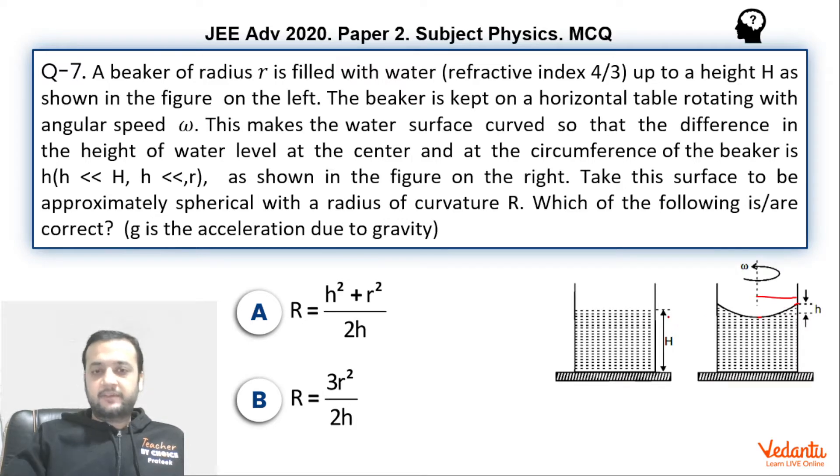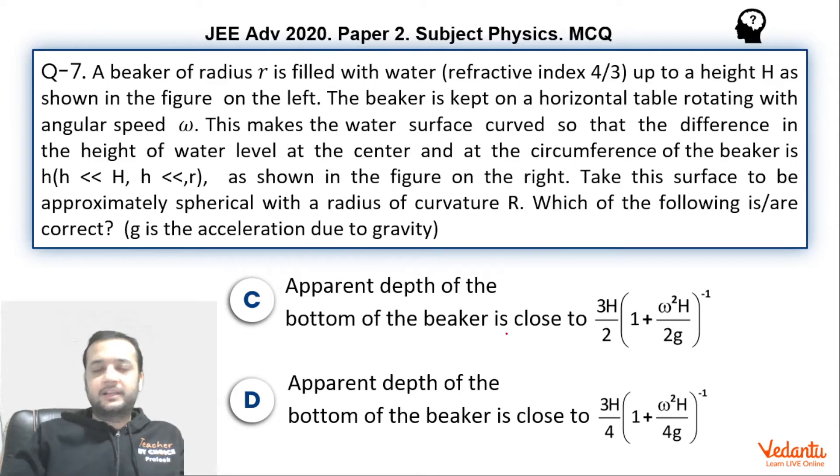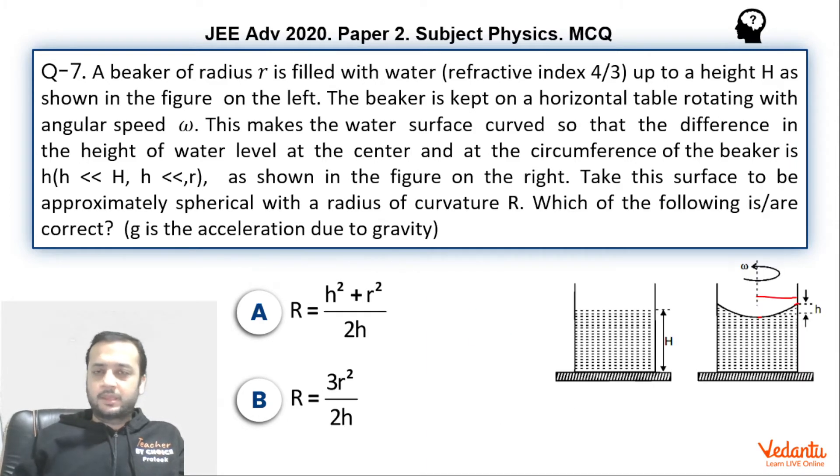So basically small h is very small in comparison to radius and capital H both. So using this data we have to find the value of capital R. Now what is capital R? Capital R is the radius of curvature of this surface which IIT has asked us to assume to be spherical, approximately spherical. And we have to also find the apparent depth of the bottom. So as I told you, the question is not very difficult from the perspective of physics, mathematical manipulations is what is required.